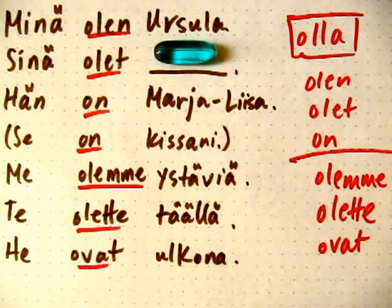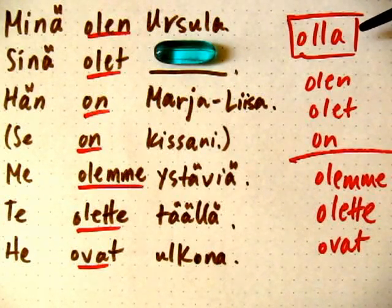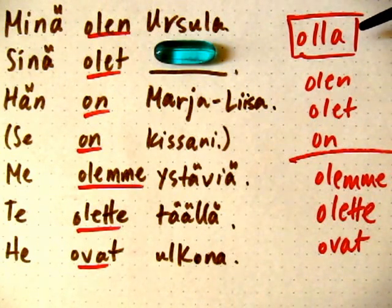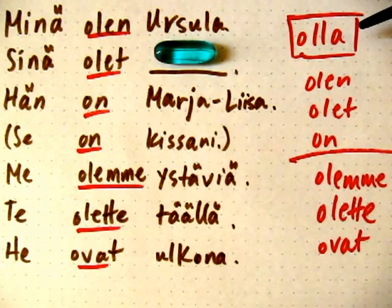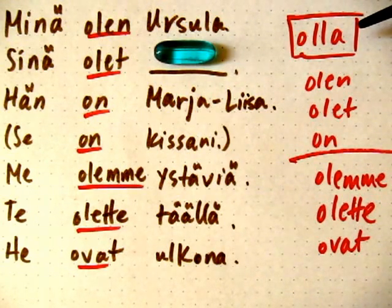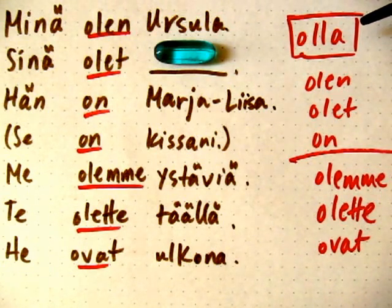In this video I'm going to teach you about the verb to be: olla. Notice the double L sound — olla. If I had a single L, it would sound like ola. But I'm not saying hello in Spanish, so it's olla.